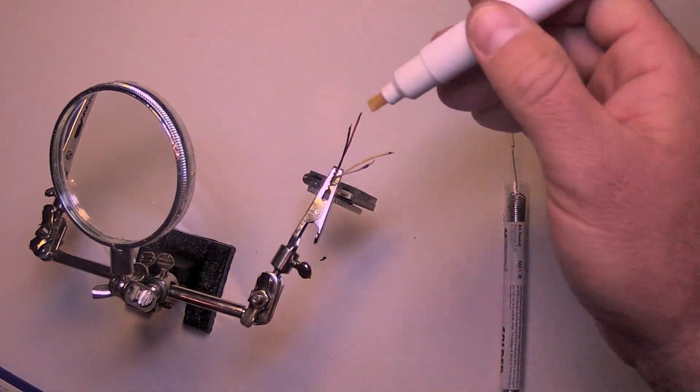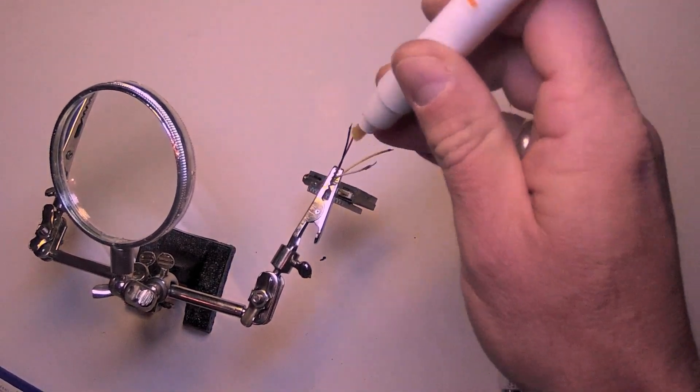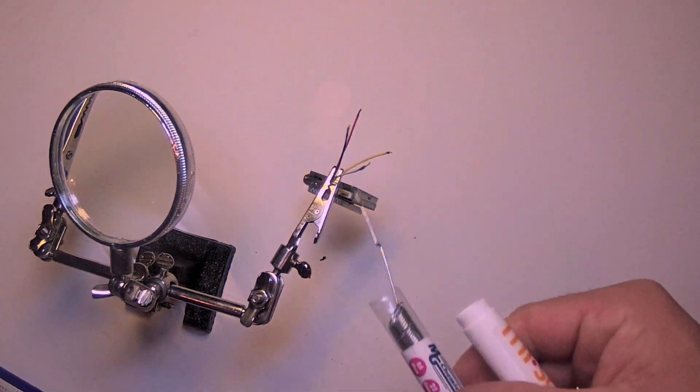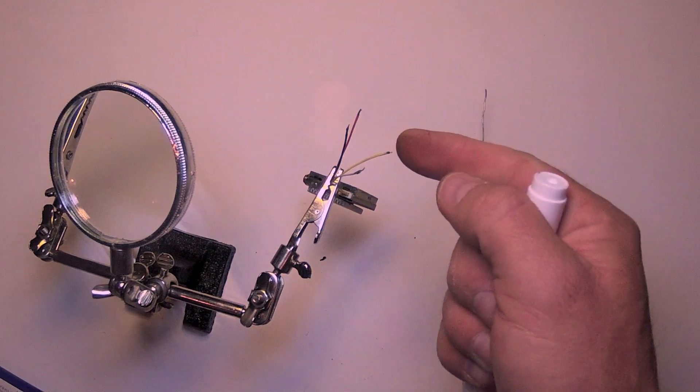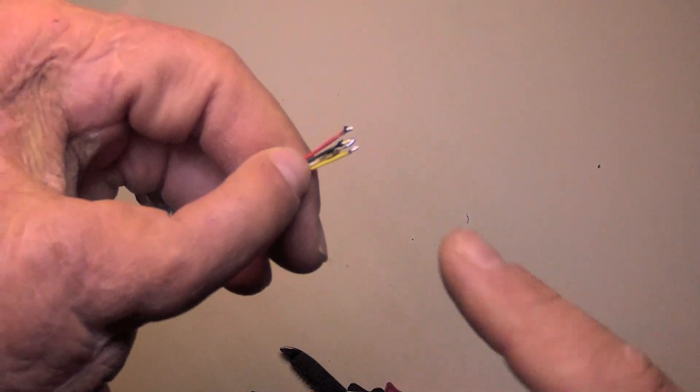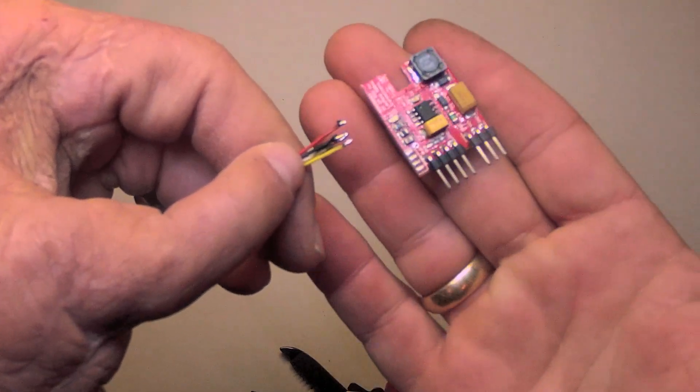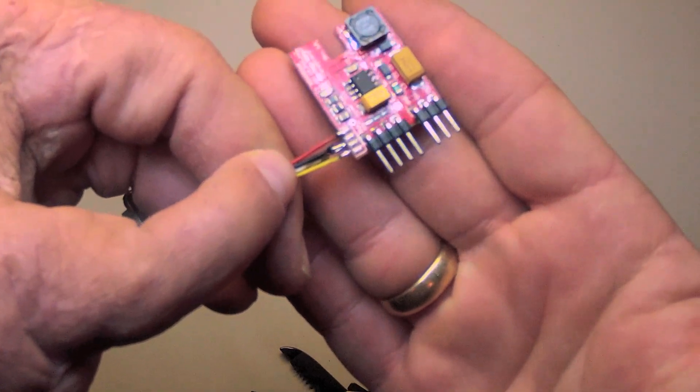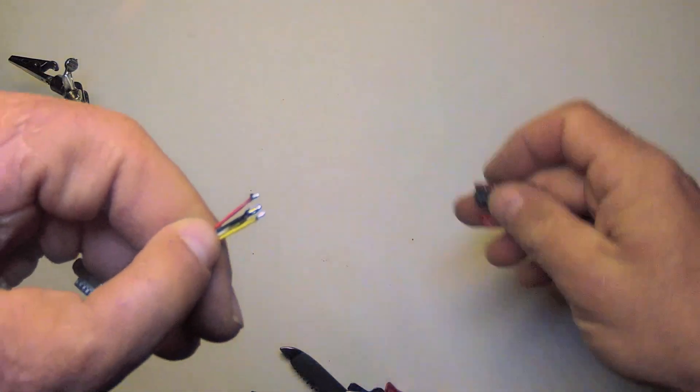Next apply some liquid flux to the tips of each of these contacts and use a high-quality solder to tin the tips of each of these, leaving exposed about 3mm of conductor inside. Now that the tips are tinned, we'll trim them back one final time so you get a nice, square, clean, pre-tinned wire in preparation for soldering to the printed circuit board here.